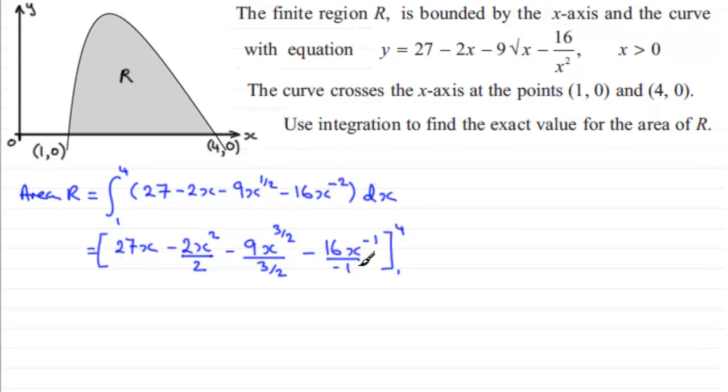What I'm going to do first of all, though, before I substitute my values in, is just clean this up. What we've got here is 27x, but I can see that minus 2x squared divided by 2, well that's just going to give me minus x squared.